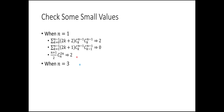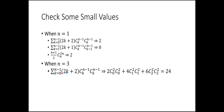Now let's check n=3. We have three terms for k=0, 1, 2. When k=0: coefficient is 2, giving 2 times C(2,0) times C(2,0). When k=1: coefficient is 4, giving 4 times C(2,1) times C(2,1). When k=2: coefficient is 6, giving 6 times C(2,2) times C(2,2). Summing these together gives 24.